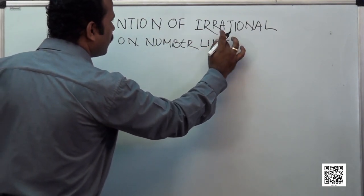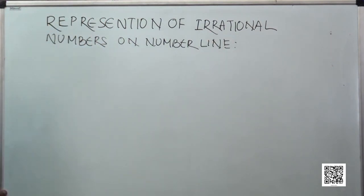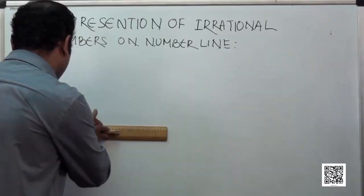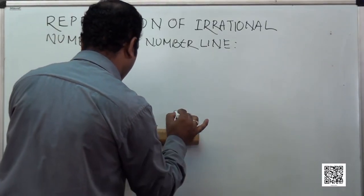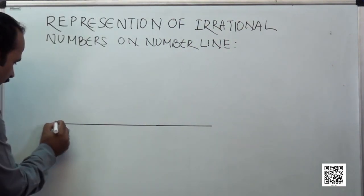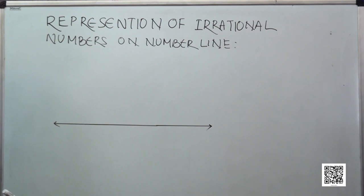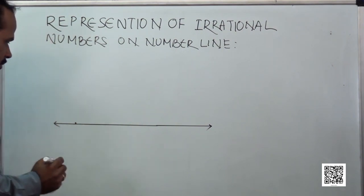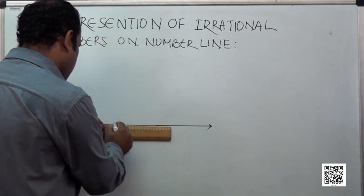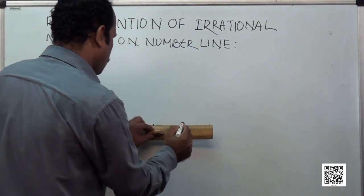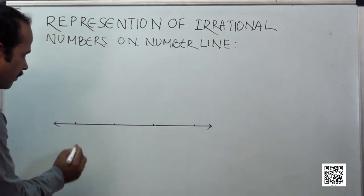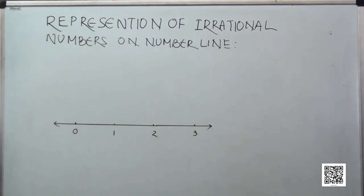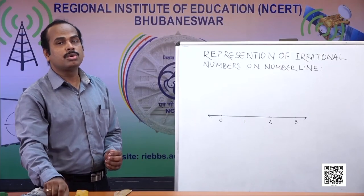I have taken the example as root 2. Let me take a line with the help of a ruler. I have selected a line and chosen a point as O. At equal distances let me take some points — this is 1, at equal distance this is 2, and this is 3. So selecting this point as 0, this represents 1, this is 2, and this point is 3. This is a number line.